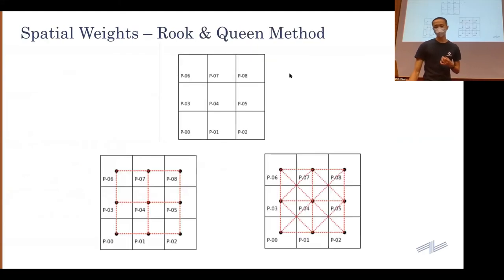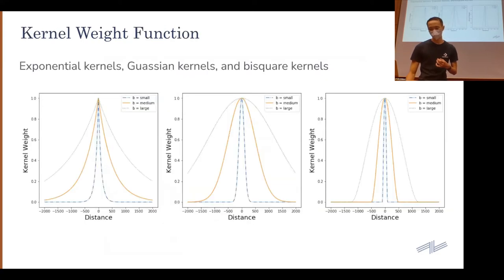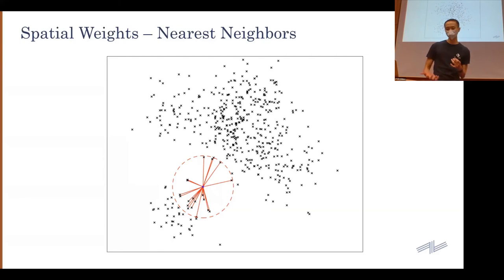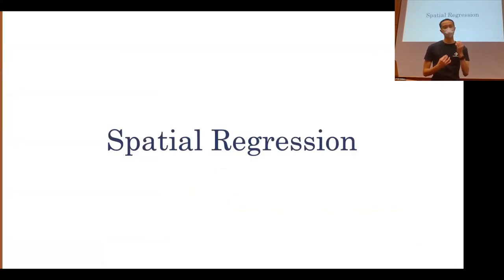Generally, for spatial analytics we first look at spatial autocorrelation to determine whether there's spatial dependence. If there is, we can apply methods like spatial regression to take into account this effect in our models.